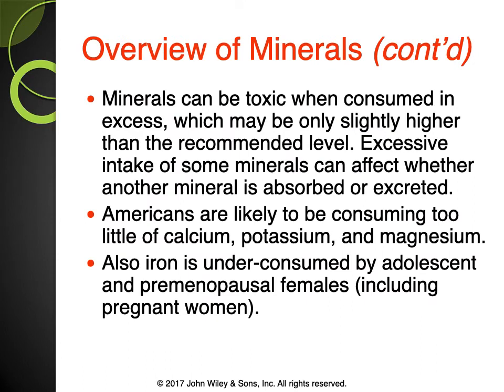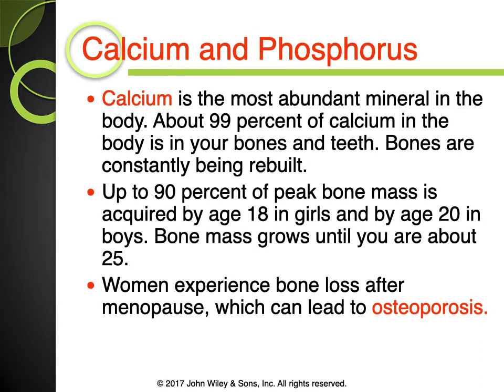Major minerals are ones we need more of; trace minerals we don't need as much of, with iron being the exception since we tend not to get enough. Just like vitamins, there's an upper limit — you can get too much of minerals, though that's very rare. Calcium is the most abundant mineral in the body. About 99% of it is in our bones and teeth. Up to 90% of peak bone mass is acquired by age 18 in girls and age 20 in boys, though bone mass can continue growing until about age 25.